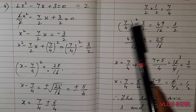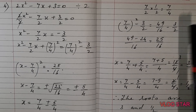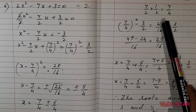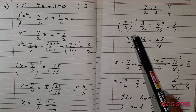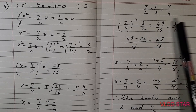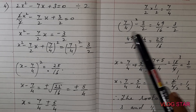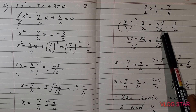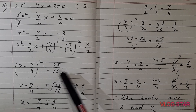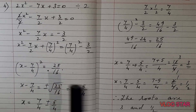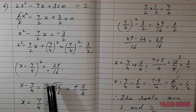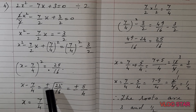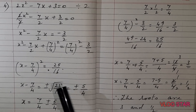Now solve the right side: (7/4)² - 3/2 = 49/16 - 3/2. Take the LCM of 16 and 2, which is 16. Divide 16 by 2 = 8, so 8 × 3 = 24. So we have 49 - 24 = 25, divided by 16. So the right side equals 25/16. Therefore (x - 7/4)² = 25/16.